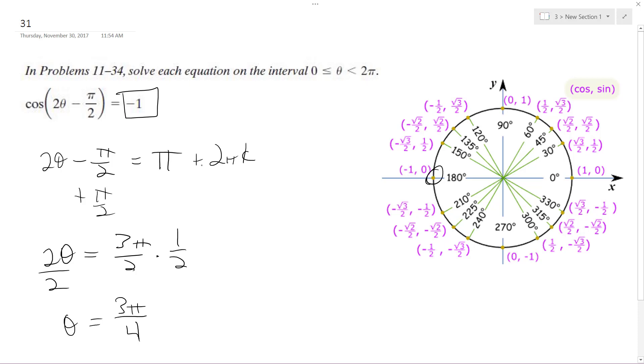I should have done this. I made a mistake. 3 pi over 4 is right, but just in case, so I add pi over 2 to both sides. Alright, so...